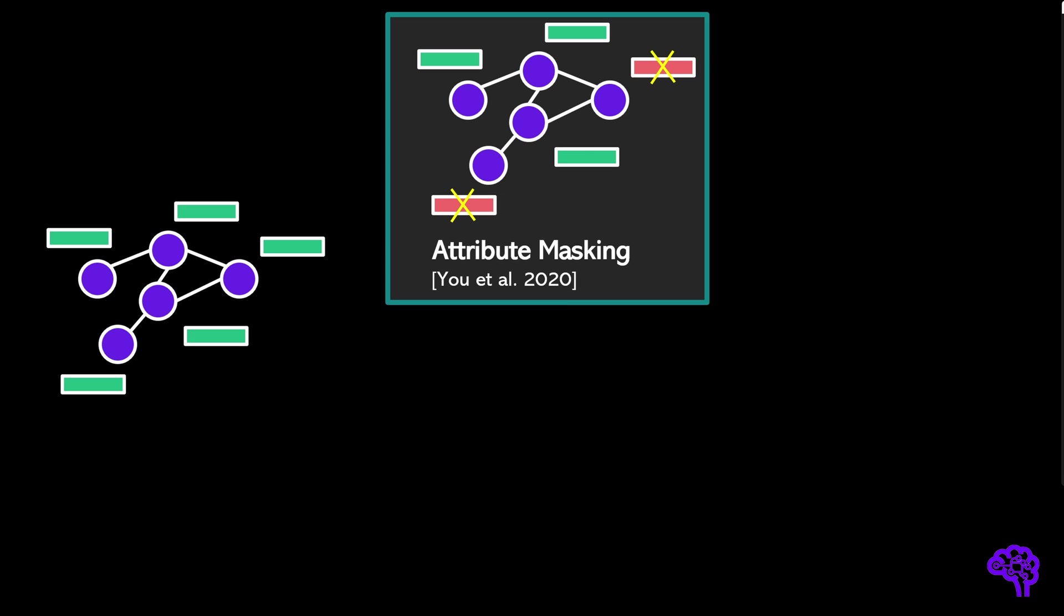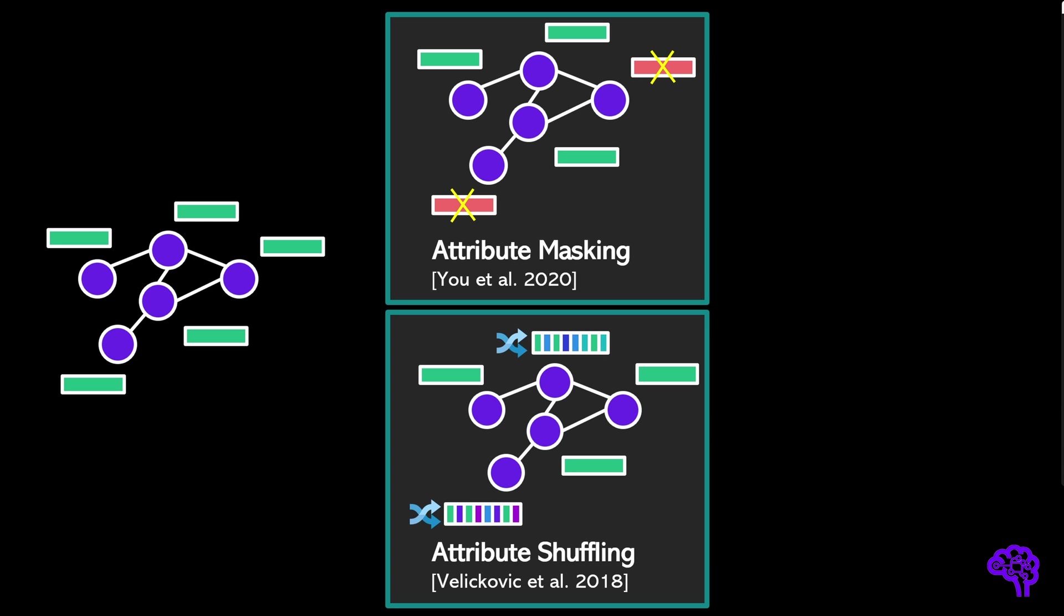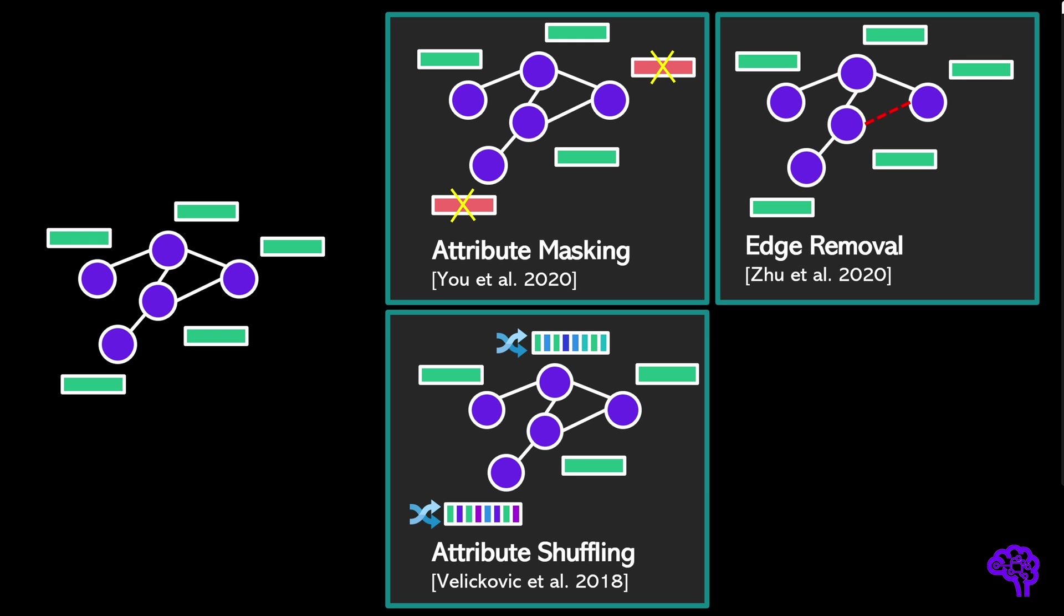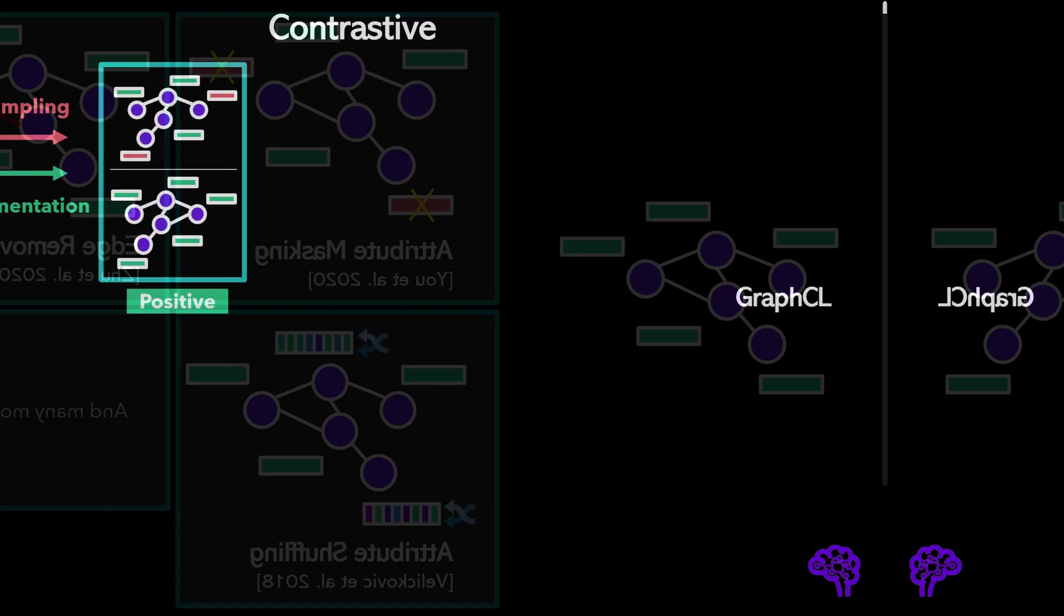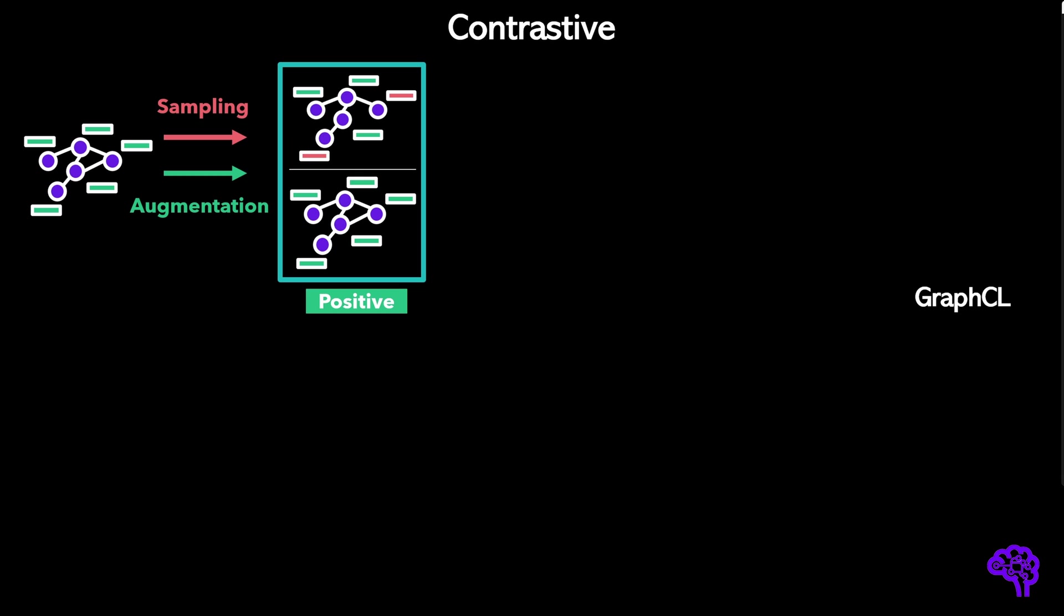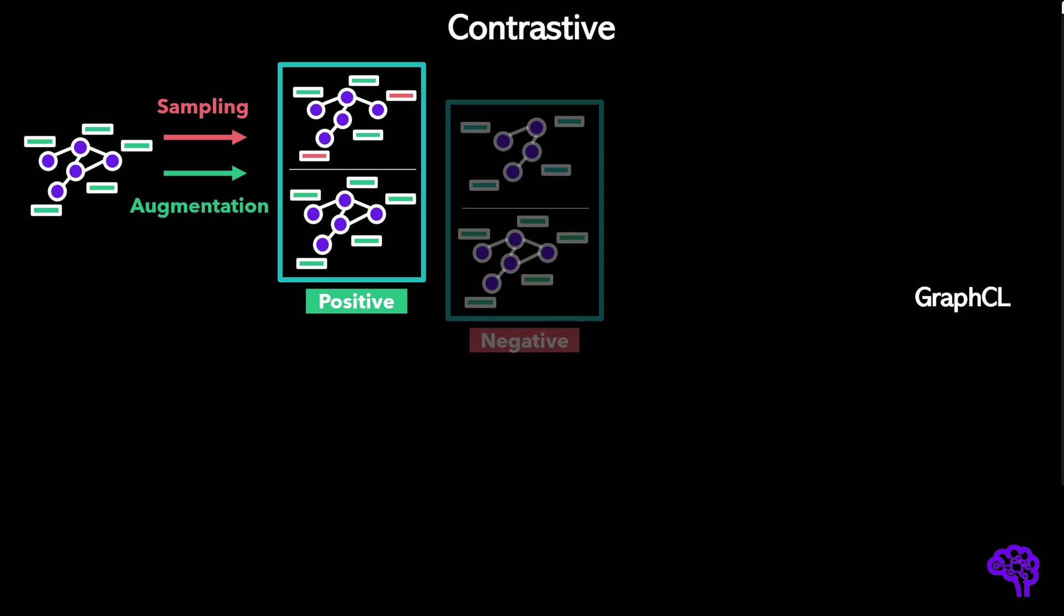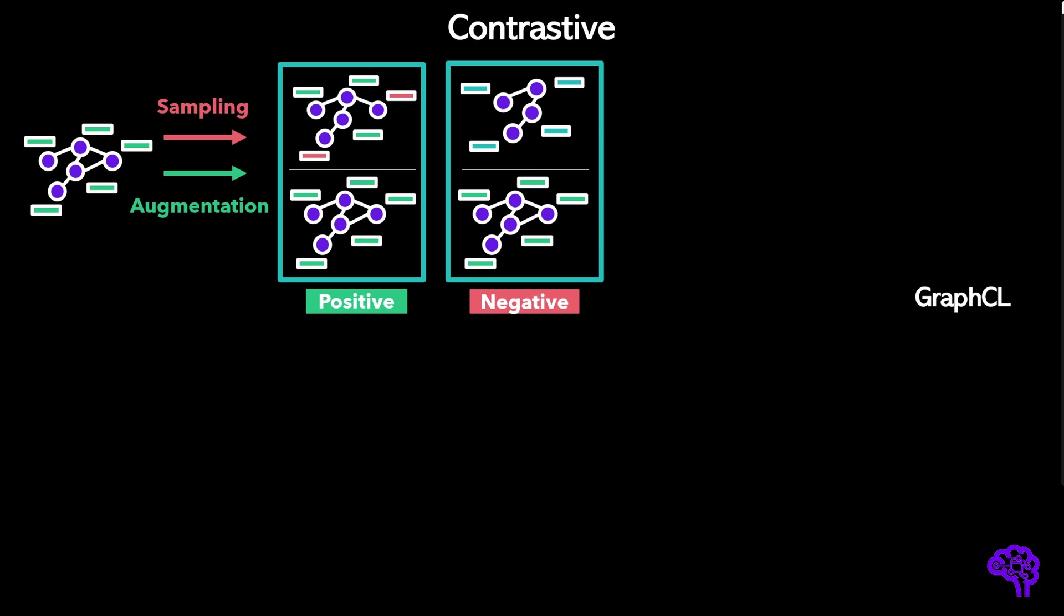This input graph can for example be augmented by masking attributes just like I've shown before. This operation sets parts of the entries in the node feature matrix to zero. Another option that was used in DeepGraph InfoMax is to randomly shuffle attributes such that the node feature information is destroyed. Besides augmenting the node feature information, it's of course also possible to play with the edges, for example by removing or adding them. There are plenty of other approaches but I think you get the idea. Besides augmented positive pairs, it's also necessary to show the model negative examples. Negative pairs are obtained by negative sampling within the batch. These are simply two different graphs from the dataset.